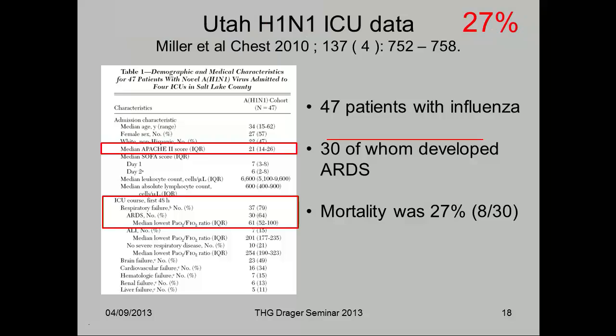Looking at one last paper — a small study of just 50 patients in a unit in Utah, Salt Lake City, during pandemic flu. Thirty of them had ARDS, and they achieved a mortality of 27%. What they did was simply adhere very closely to the ARDSnet criteria — nothing more. No rescue therapies. Just very tight, 6 mls per kilo. So you can get down to these sorts of levels.